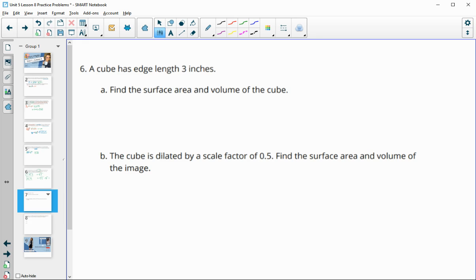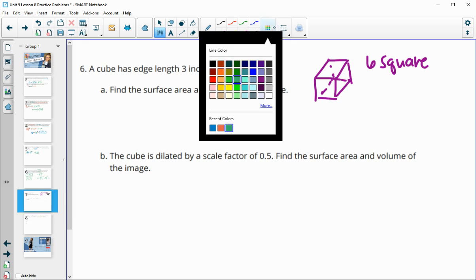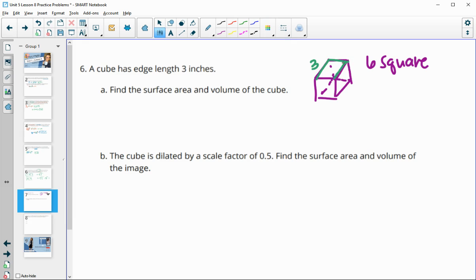Number six, a cube has an edge length of three inches. Find the surface area and volume of the cube. A cube has all square surfaces. For the surface area, there are six square surfaces. If we find the area of one of them, we can just multiply by six. The length of one side is three. If we do three times three, that gives us the area of one square, which is nine. The surface area is going to equal nine times the six surfaces, so we get 54 inches squared for the area.